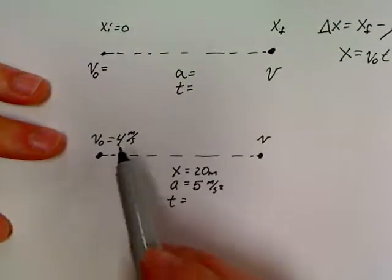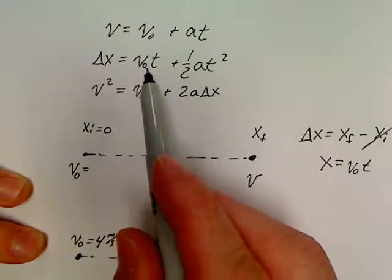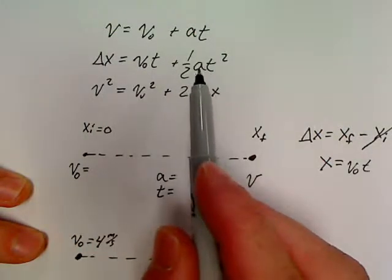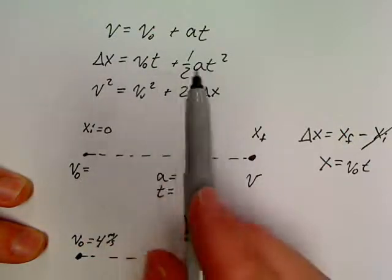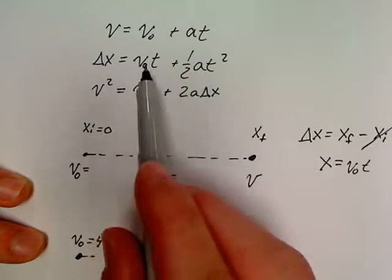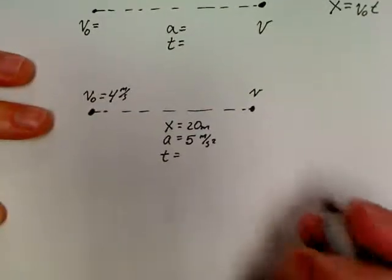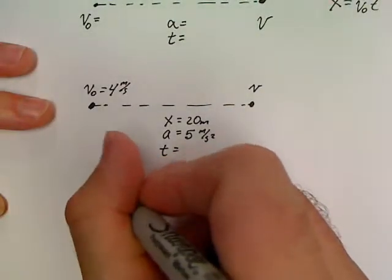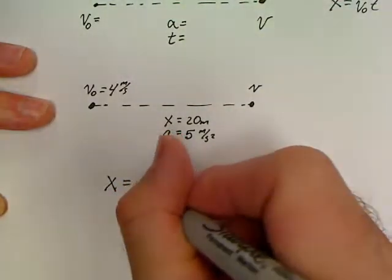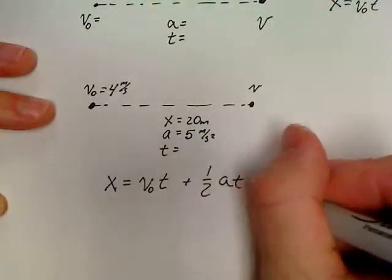I'm looking here, I've got V₀, X, and A. And if you look up here, V₀, X, and A are all found in this third equation. And I want to pick this one first because this gives us a chance to use a quadratic. Because T is the only unknown left in this equation. So let's just go ahead and write out X equals V₀T plus 1/2 AT squared.